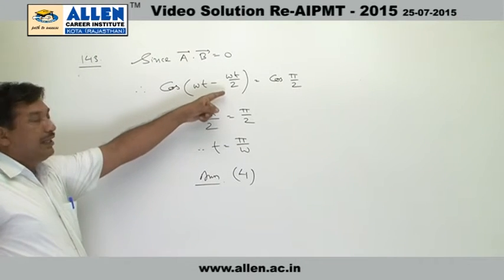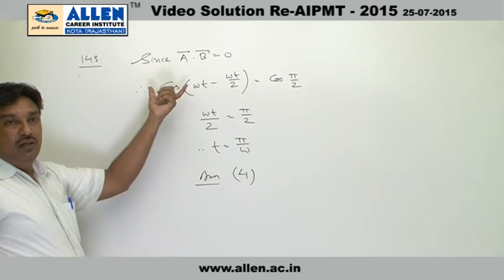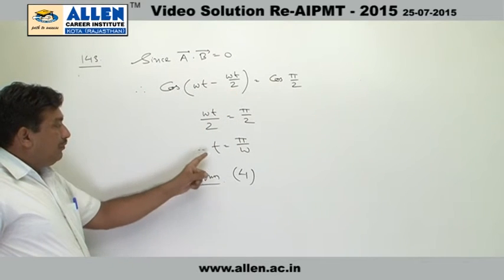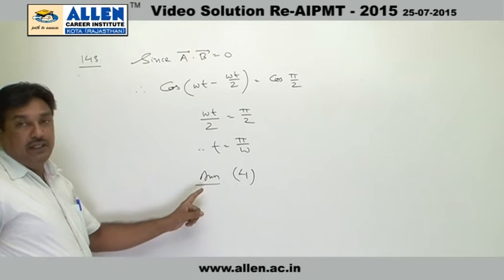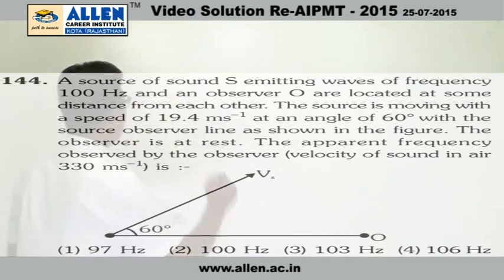Because that is the formula, equal to cos π/2. After solving, we get t equals π/2, and the correct answer is 4. In question number 144,